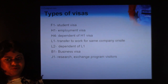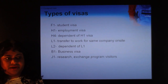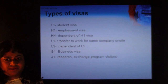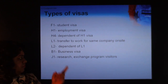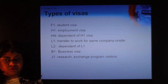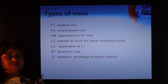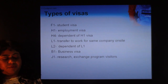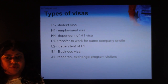L-1 visa is for intra-company transfers — if your company in India transfers you to their US branch office, you get an L-1 visa, but you can only work for that company and cannot transfer it. L-2 is the dependent visa for L-1 holders; the dependent can live in the country but not work. B-1 is a business visa, usually given for 45 days or two months, for people attending conferences, trade shows, or negotiating deals.